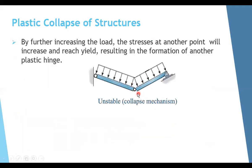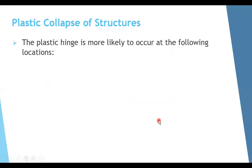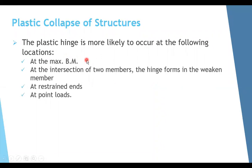Applying more loads, the plastic hinge at the fixed end cannot take any additional moment beyond M_plastic. However, the moment near mid-span was still less than M_plastic, so that cross section can continue taking more load and stress until it too reaches M_plastic. Once a second plastic hinge forms near mid-span, the structure becomes unstable — and this is called the collapse mechanism. So there is a clear relationship between the number of plastic hinges and the collapse mechanism.